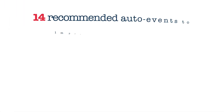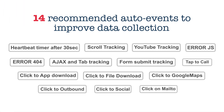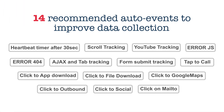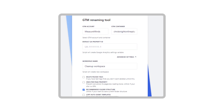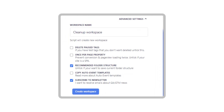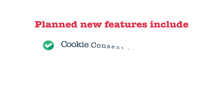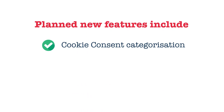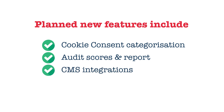The pro version now has 14 recommended auto events to improve data collection. New features are being added every month, so remember to tick the box to subscribe to be notified when new features are released. Planned new features include cookie consent categorization, audit scores and reports, CMS integrations, and best GTM score league.